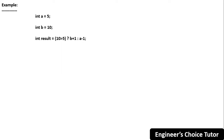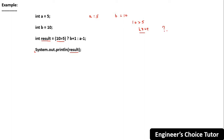Now let's look at an example. We have `int a = 5`, `int b = 10`, and `int result = (10 > 5) ? b + 1 : a - 1`. The condition `10 > 5` is true, so we evaluate the expression after the question mark, which is `b + 1`. Since b is 10, `10 + 1 = 11`, so result becomes 11.